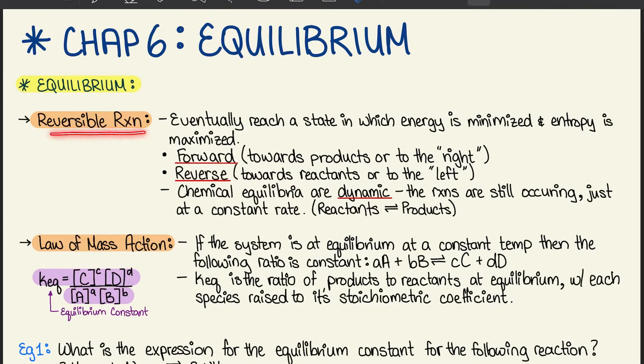We have a reversible reaction, eventually reach a state in which energy is minimized and entropy is maximized. The forward reaction is towards the products or to the right, and the reverse reaction is towards the reactant or to the left.